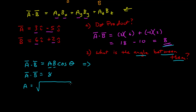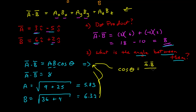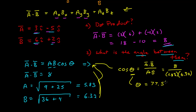I can calculate the magnitudes of each given the components. The magnitude of a is the square root of the sums of the squares of the components, so that's the square root of 9 plus 25, which is about 5.83. The magnitude of b is 6.32. So cosine theta equals a dot b over the product of their magnitudes, which is 8 over 5.83 times 6.32, and that gives me an angle of 77.5 degrees.